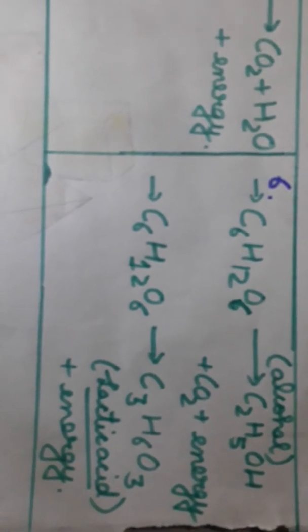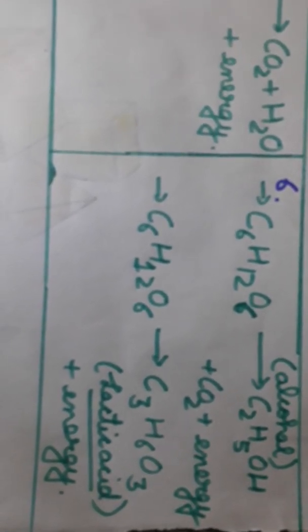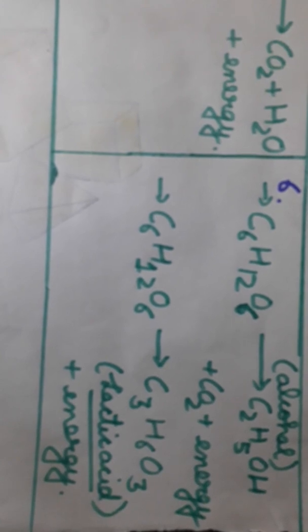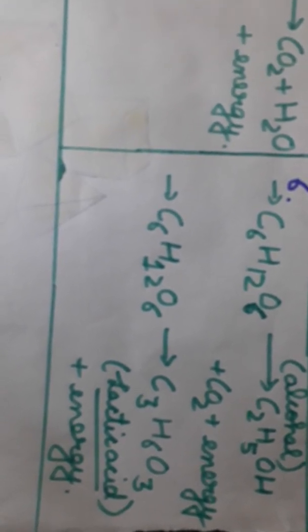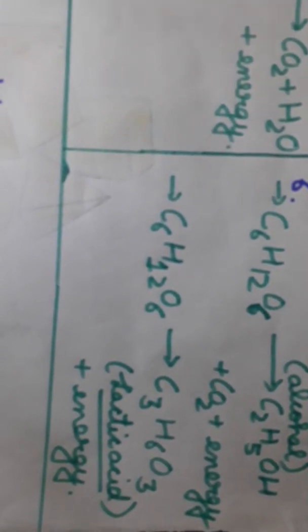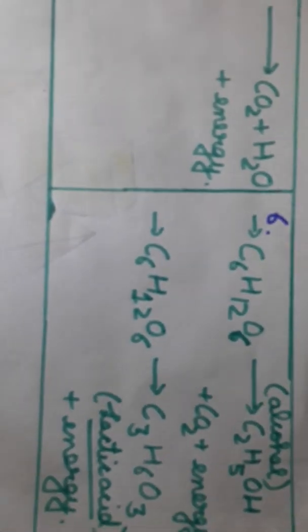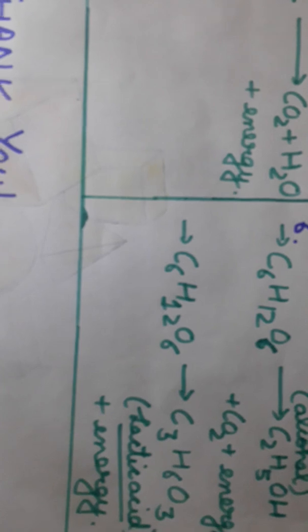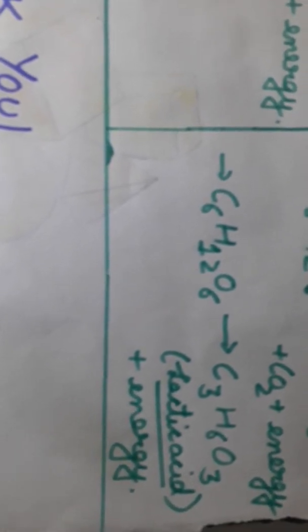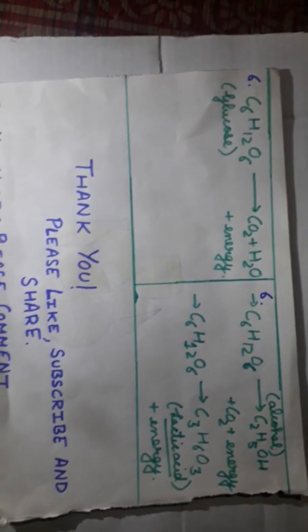For anaerobic respiration there are two equations — the first is for cells and the second for muscles. For cells: C6H12O6 → C2H5OH (ethyl alcohol) + CO2 + energy. For muscles: C6H12O6 → C3H6O3 (lactic acid) + energy.